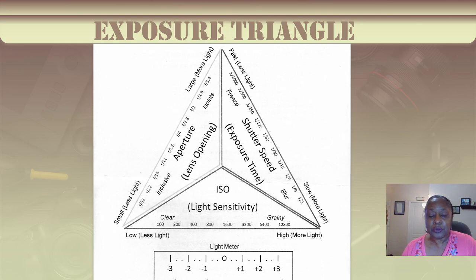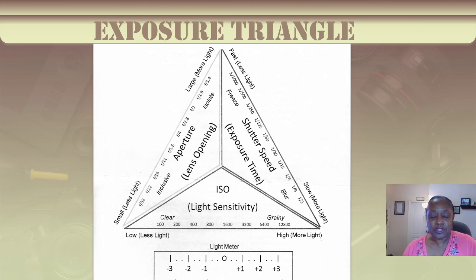We want to tie it all together. If you adjust one of the three variables, then in order to keep the same brightness, you must change one of the other two in an equal amount in the opposite direction. Changing one of these variables alters the brightness of the final image. So if you find your image too dark, try changing one of these three things until it's correctly exposed.